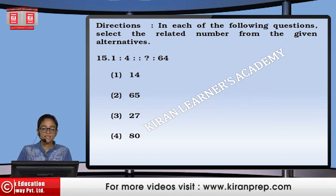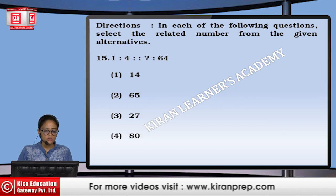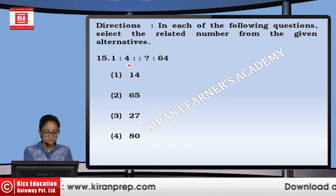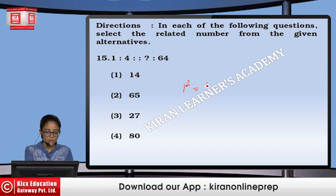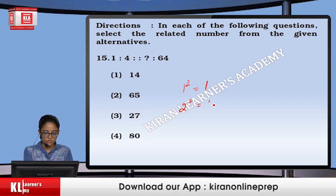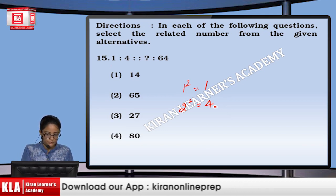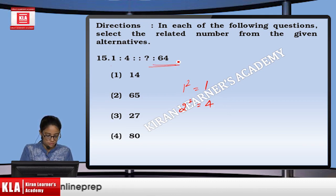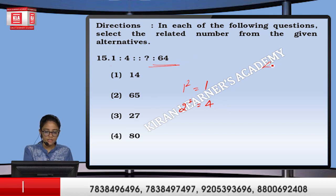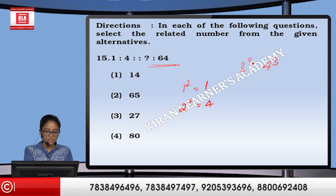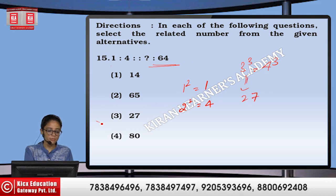Next, 1 is to 4. So, 1 squared is 1 and 2 squared is 4. Similarly, this involves a cube — so we have to write 3 cubed, which is 27. The option number 3.